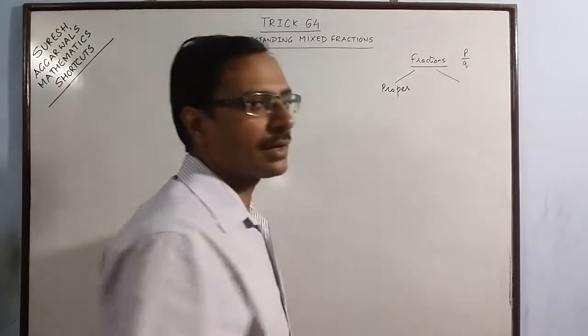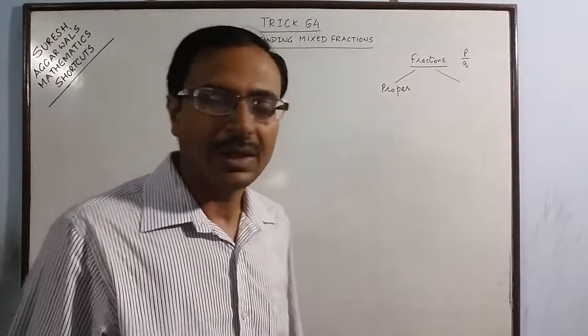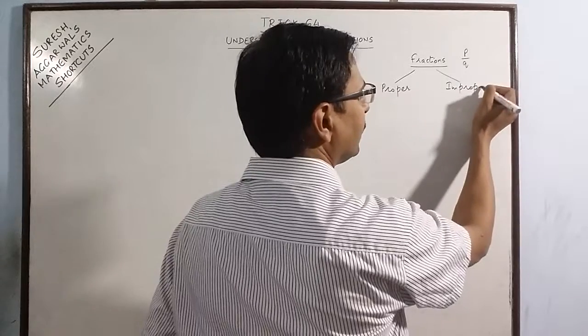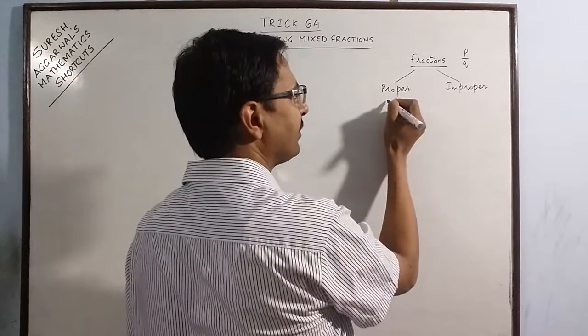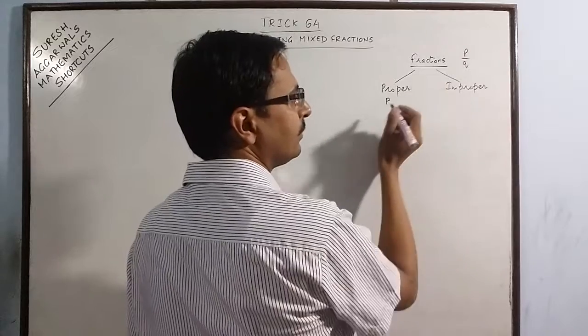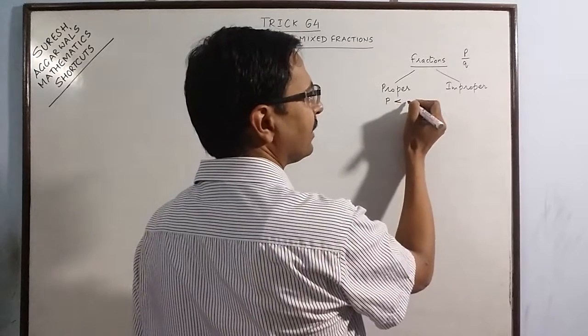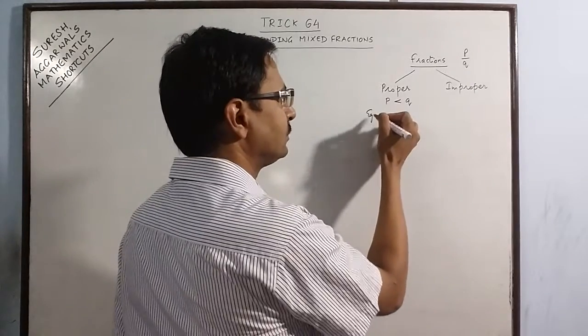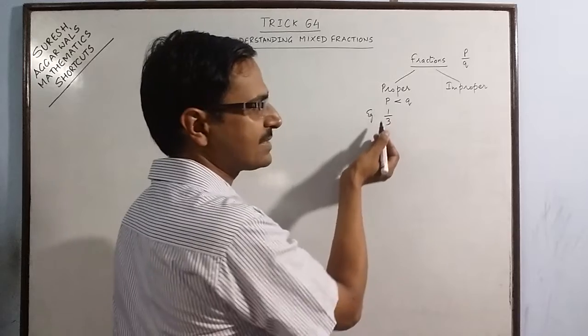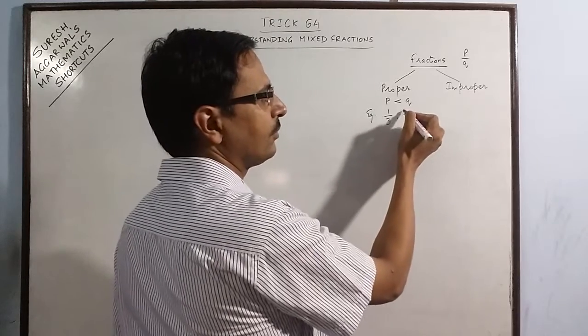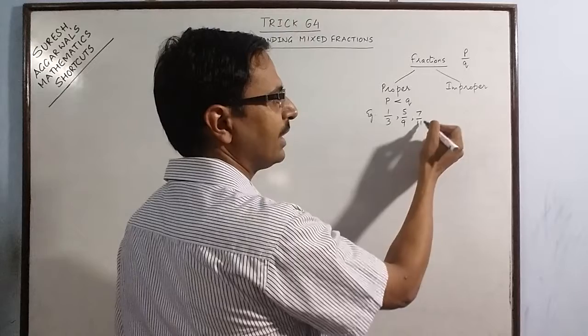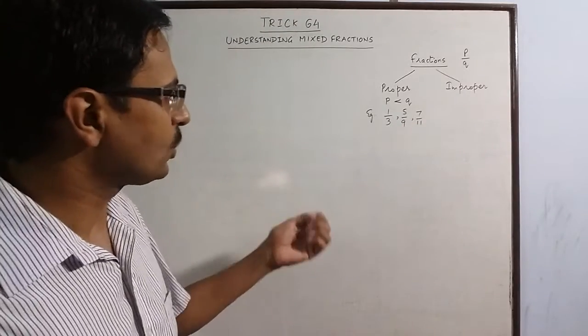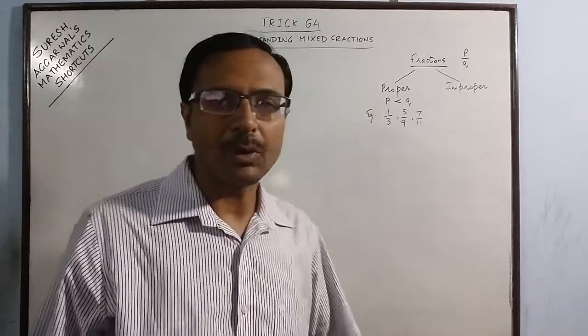One type of fractions are proper fractions, and the others are improper fractions. These proper fractions have the numerator p less than q. So, we have say 1 upon 3 where numerator is less than the denominator, 5 upon 9, 7 upon 11 and so on. These are some examples of proper fractions.